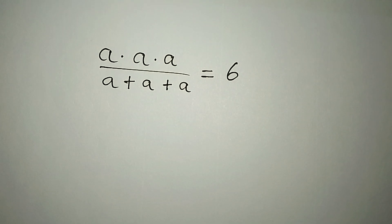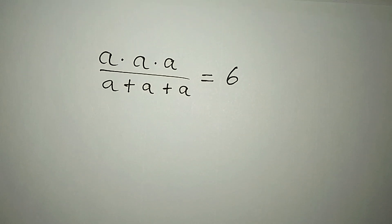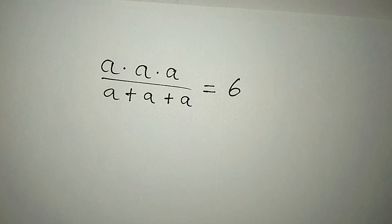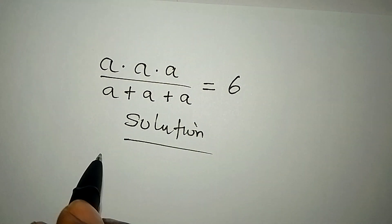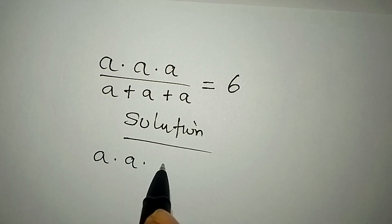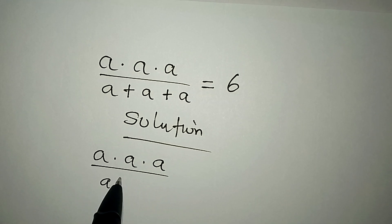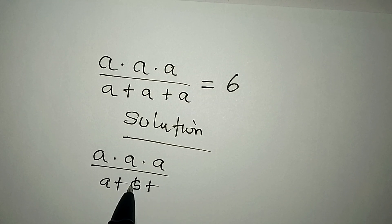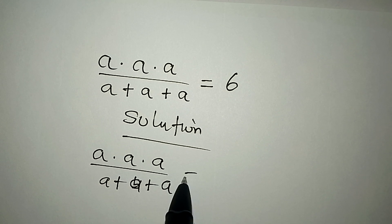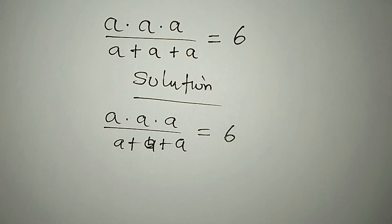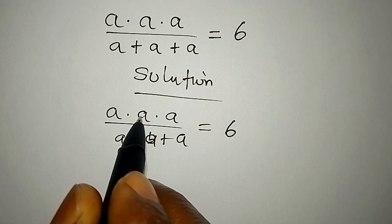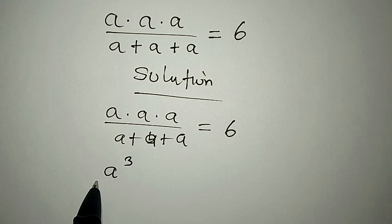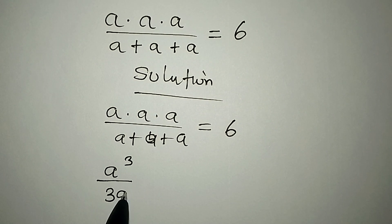Let's provide the solution to this problem. We have a multiplied by a multiplied by a over a plus a plus a, equal to 6. From here, a times a times a gives a to the power of 3, and the denominator is 3a, so this equals 6.